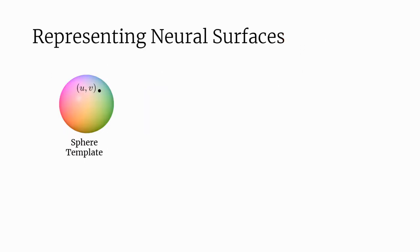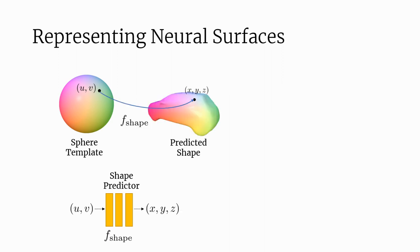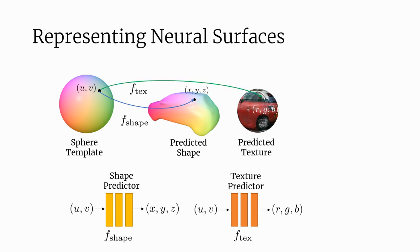To represent surface-based geometry, we use a shape predictor that deforms UV coordinates on a sphere to a predicted shape. Note that this guarantees a watertight, enclosed surface. Similarly, we can represent texture using a texture predictor that maps UV coordinates to RGB pixel values. Together, the shape and texture can be used to output a textured mesh.